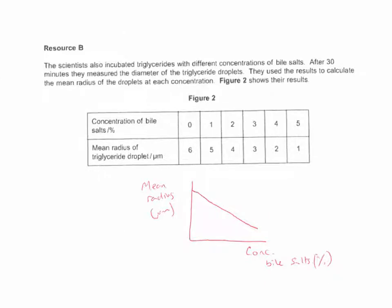So another thing that they did was they looked at the, we know that bile salts emulsify triglycerides, but to what extent do they do? If you increase the concentration of bile salts, what size do the triglyceride droplets become? If you remember, the smaller the triglyceride droplet, the larger the surface area that you'll have. So question three: describe the data.